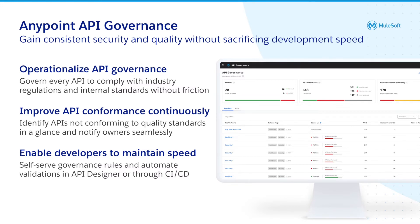If there are any violations, this is displayed as an error in Design Center, allowing developers to quickly identify issues and ensure their API spec is following the desired rules. Lastly, API Governance can be automated through CI/CD by leveraging the AnyPoint CLI to validate APIs, publish APIs, and tag Mule or non-Mule APIs in Exchange.